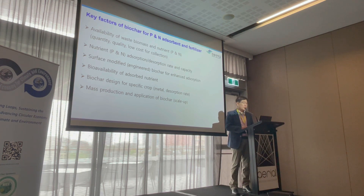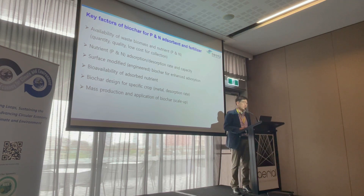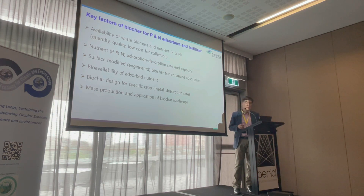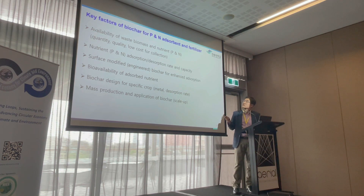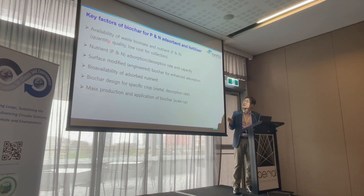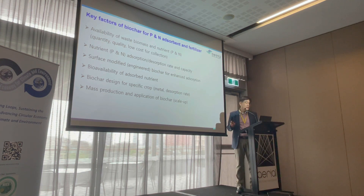We have some very important key factors for successful biochar as a phosphorus and nitrogen absorbent and fertilizer. Biochar is produced from the pyrolysis of biomass, and the biomass should be very abundant and easy to obtain both in quantity and quality, with very low cost for collection.